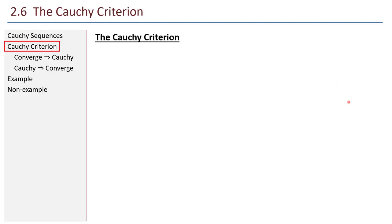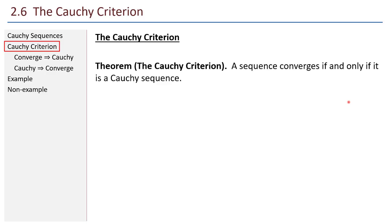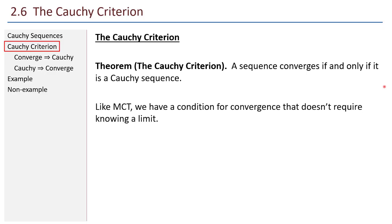Here's the Cauchy criterion: a sequence converges if and only if it is a Cauchy sequence. Cauchy sequences are exactly sequences that converge. Like the monotone convergence theorem, here we have a condition for convergence that doesn't require knowing a limit. I don't have to know where the sequence goes in order to determine that it actually converges.